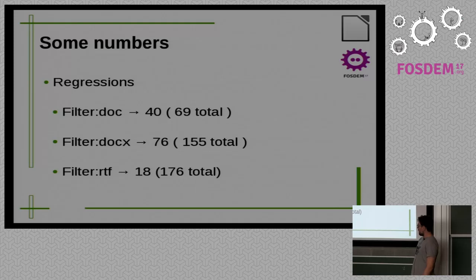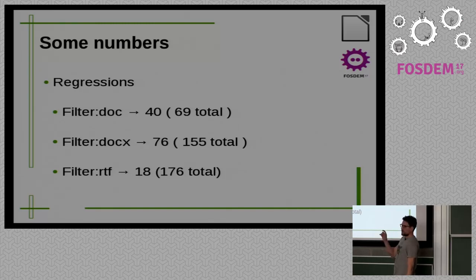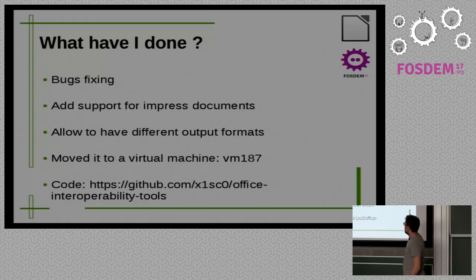Some numbers from Bugzilla. I use basically the keyword regression. We have right now 40 open regressions out of 69 for filter.doc. 76 open regressions for filter.docx out of 155. And for RTF, we have 18 regressions out of 176. The numbers say that we can use it correctly.